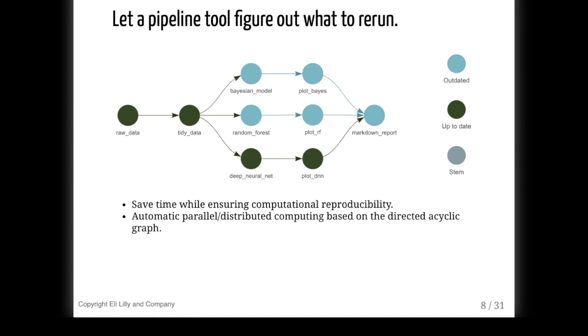Not only does this let you adapt to changes quickly, it also gives you tangible evidence of the status of the results. If the pipeline tool tells you everything is up to date, that's telling you that someone else could run your code from scratch and get the same results as you. That is a definition of reproducibility.